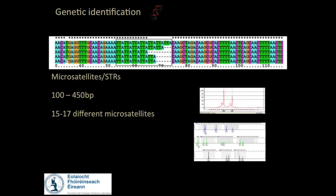Here we have a sequence from one person. Those are the four letters — A, T, C, and G. In some areas you've got repetitive motifs — in this case TTA, TTA, TTA, and so on. That motif is repeated; that's a microsatellite. It's the number of repeats that we count, which tells us the genotype. The genotype gives us the information about the locus — a specific part of the DNA that you're interrogating.